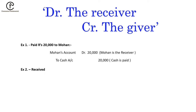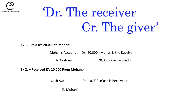Second example: received rupees 10,000 from Mohan. In this case, Mohan is the giver, so his account will be credited. Cash is coming in, so cash account will be debited by 10,000. Mohan's account will be credited by rupees 10,000 because Mohan is the giver. This is all about personal accounts.